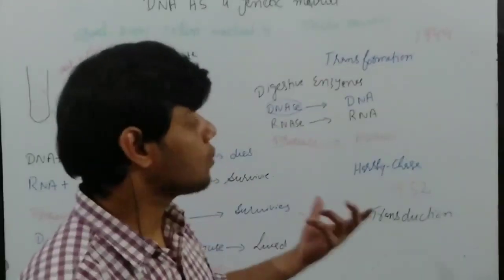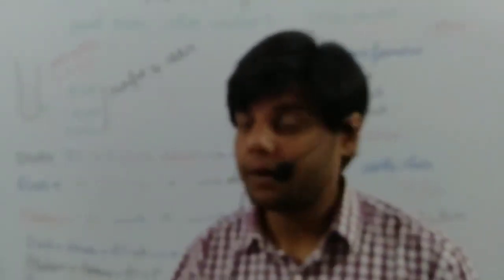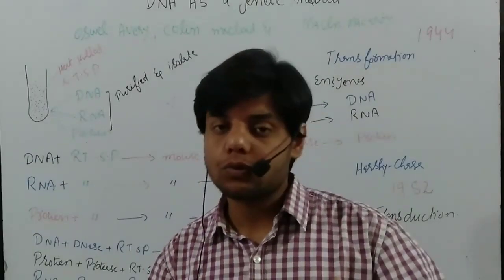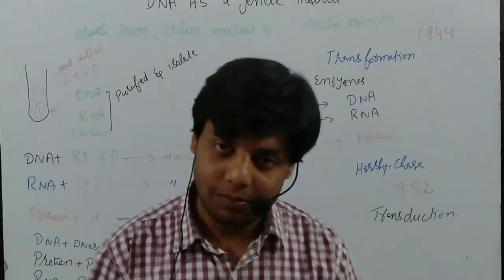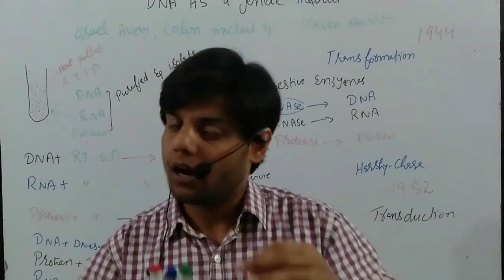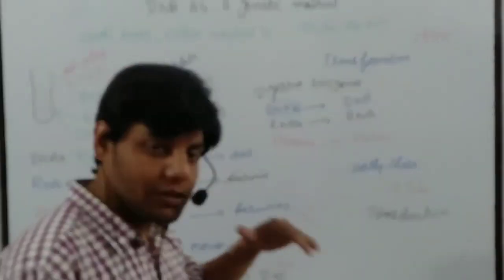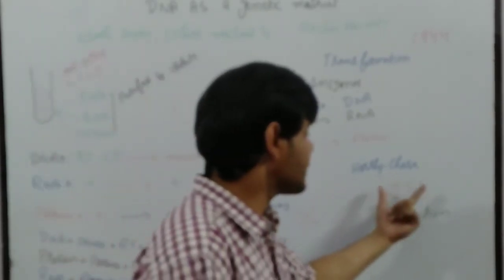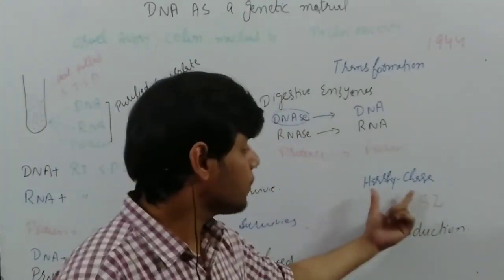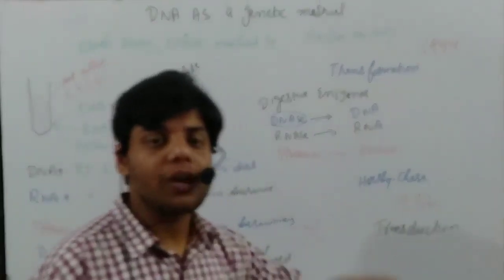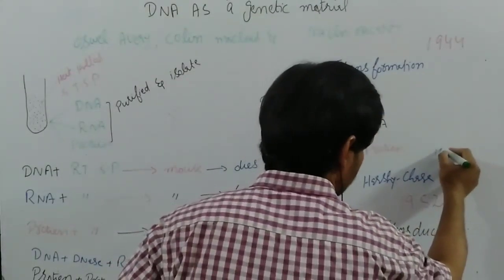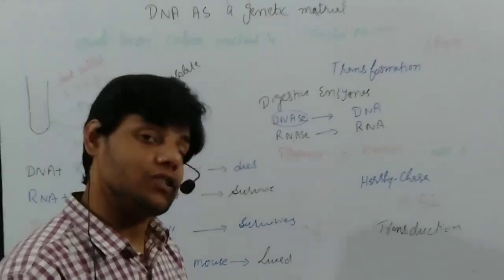Bismillah Rahman Rahim. Welcome again guys. So we talked about the Griffith experiment, we also talked about the Oswald Avery and his co-worker experiment. In these two experiments we watched that DNA is a genetic material, but still these two experiments were not accepted 100%. The last experiment today in this video lecture that we are going to talk about is the Hershey and Chase experiment in 1952. They proved that DNA is a genetic material 100%.